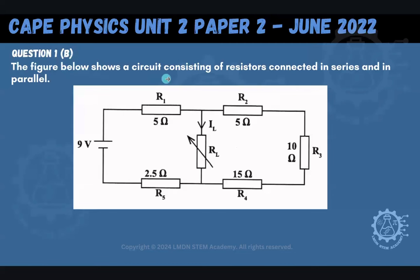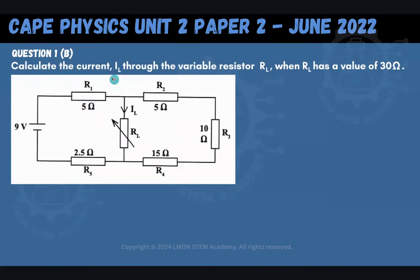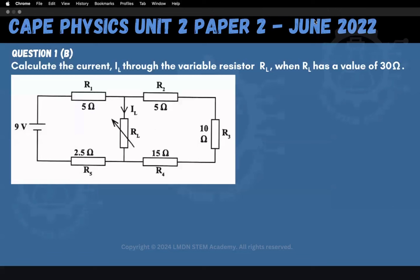The figure below shows a circuit consisting of resistors connected in series and in parallel. We have this very intricate circuit being powered by a 9-volt power supply, and we have resistors R1, R2, R3, R4, R5, and a variable resistor RL in the middle. We're being asked to calculate the current IL flowing through RL when RL has a value of 30 ohms, so we're going to add 30 ohms wherever we see RL right off the bat.